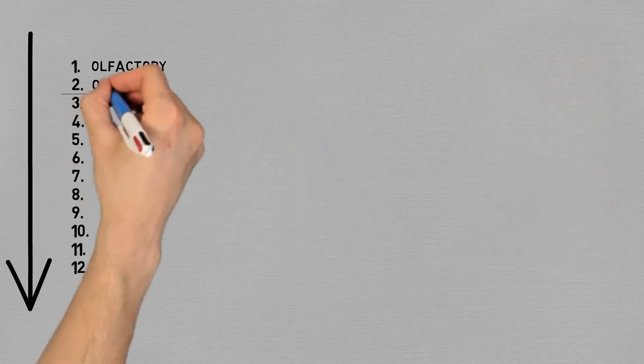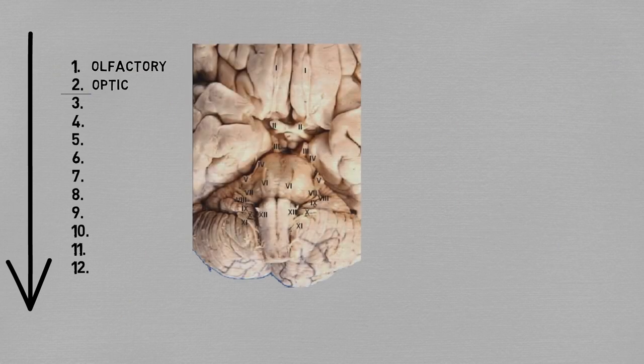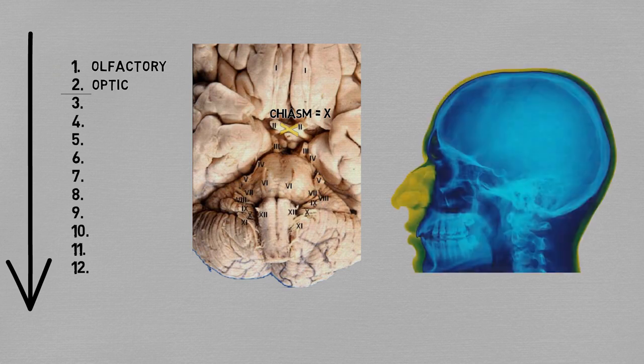Pair number two is the optic nerves, and they're best represented by the optic chiasm — this X-shaped structure that sits right in front of the pituitary in the vicinity of the sella turcica.